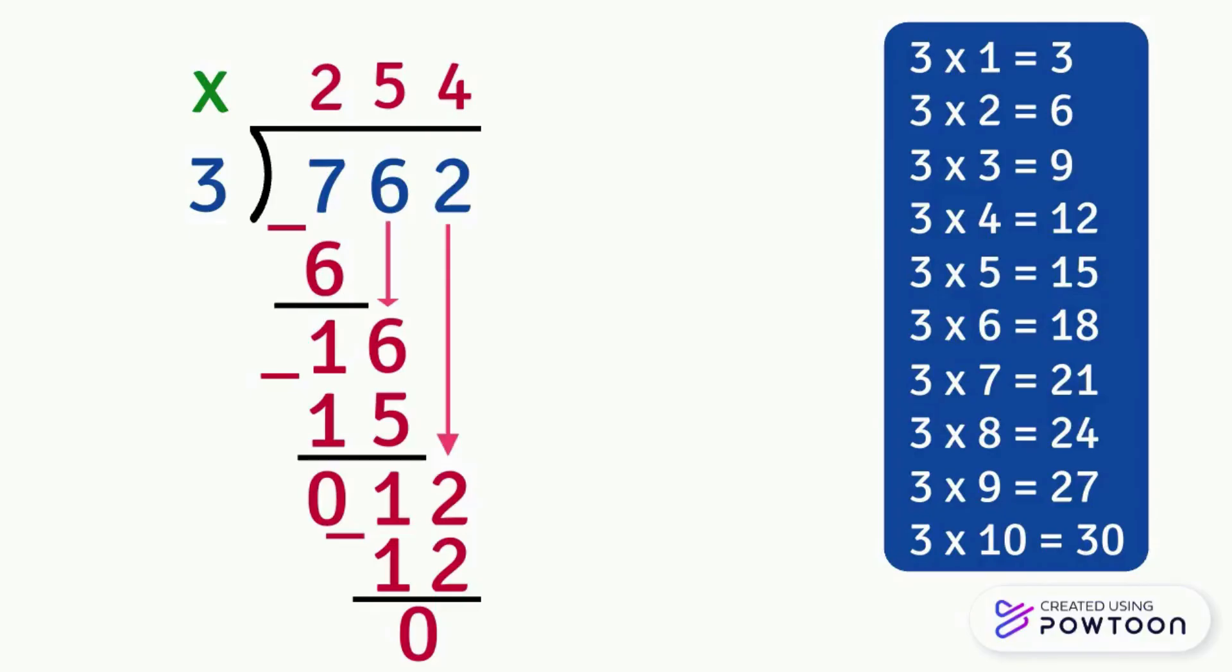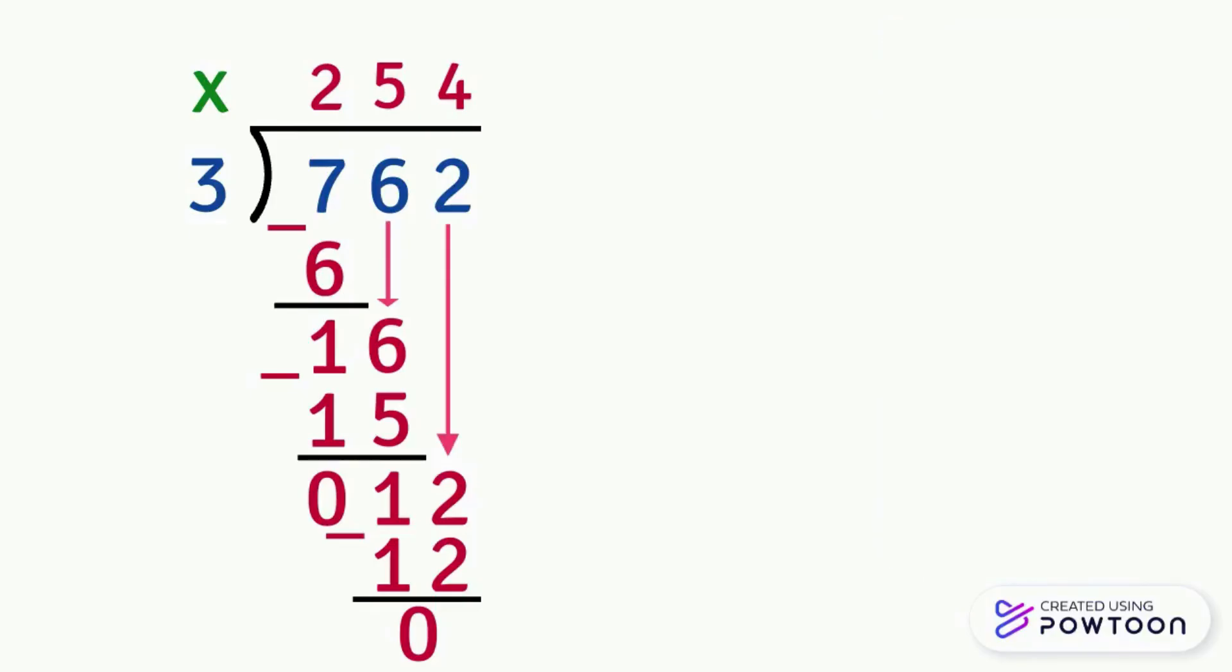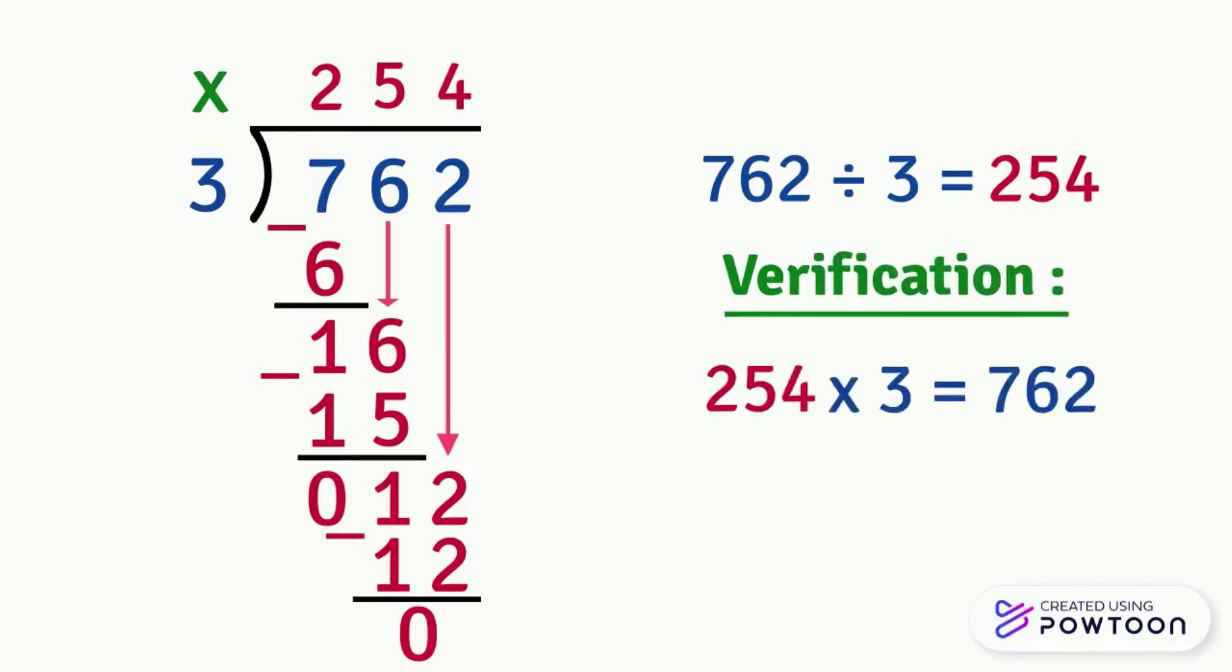And since there is no more number to bring down, so we have finished: 762 divided by 3 equals 254. If we want to check our answer, we find that 254 times 3 gives us 762, so my work is correct.